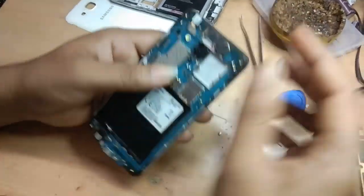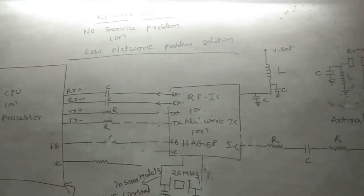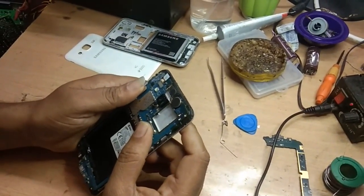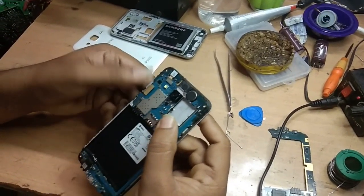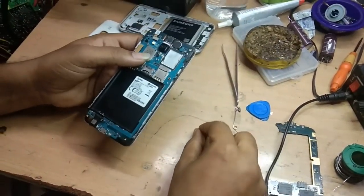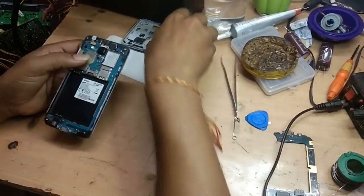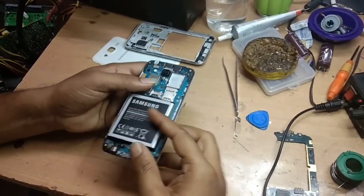In regular training classes I'll explain how to trace out the complete dead set problem circuit. This is the circuit for the network section — for no service problems we trace out this circuit on the PCB. Similarly, there will be a circuit for the dead set problem and we trace out the complete PCB power section. I will give you all those techniques in the regular training classes. I have now connected the battery.